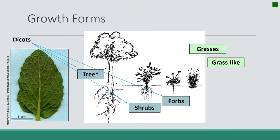The other group are dicots. Our shrubs and our forbs make up this group. Dicots tend to have a broader leaf with a netted venation. You can see here on this leaf we have these primary veins, and then we have all of this webbing that goes in between these primary veins. Those are some simple characteristics that split up those two different groups.